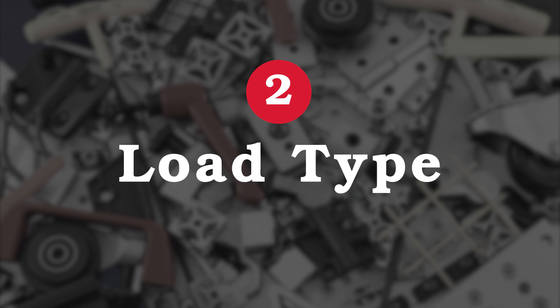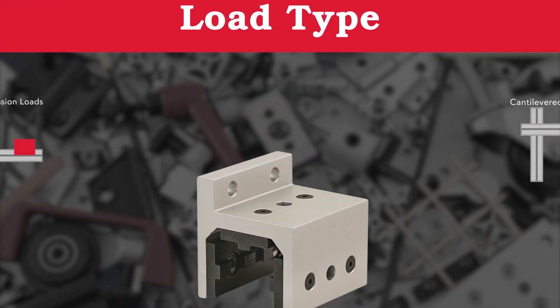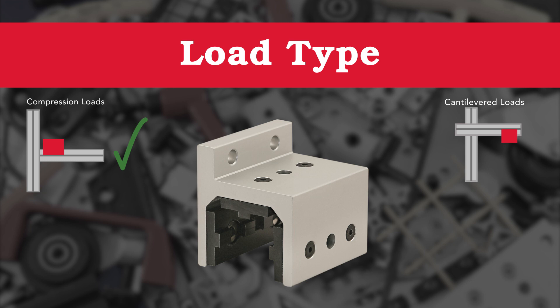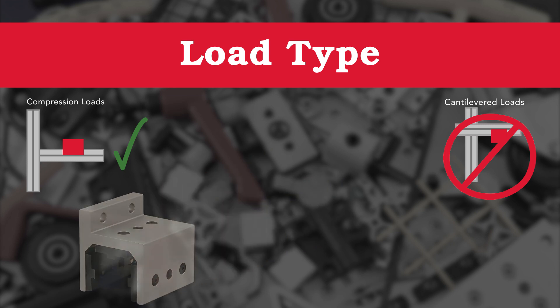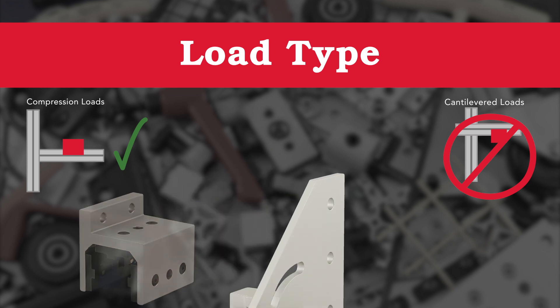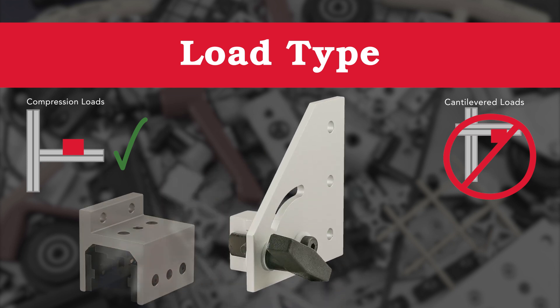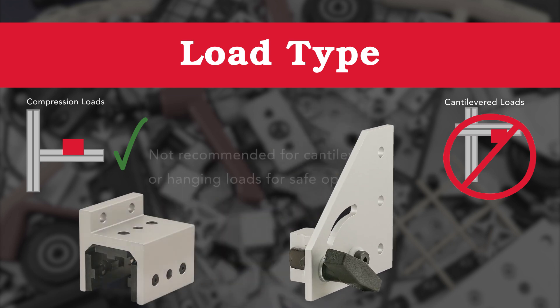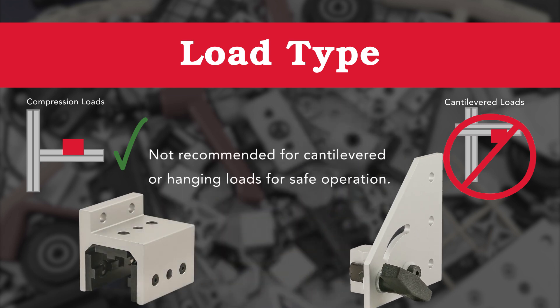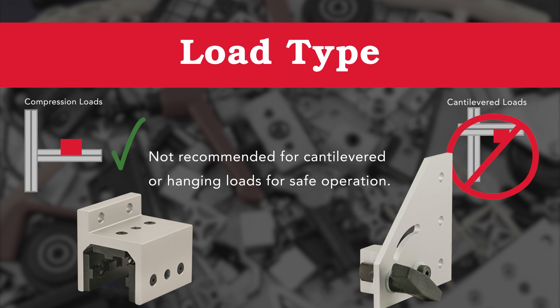Now let's look at load type. 8020 linear bearings are designed to support compression loads only — they're not intended to support hanging loads to function properly and safely. Dynamic pivots move in an axial motion but are not recommended for cantilevered loads.